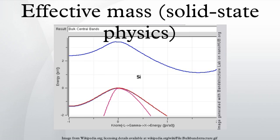In solid-state physics, a particle's effective mass is the mass that it seems to have when responding to forces, or the mass that it seems to have when amassed with other identical particles in a thermal distribution.